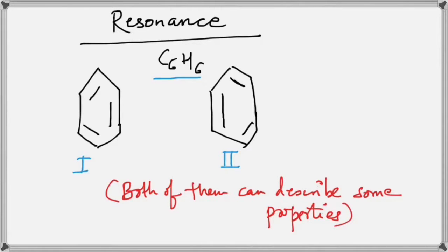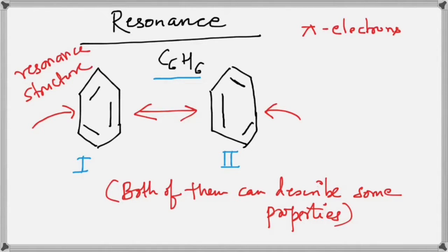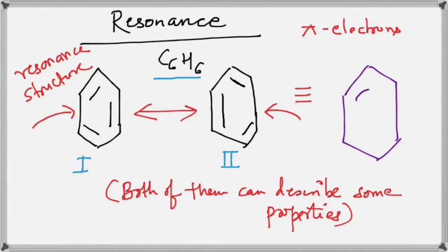Both structures can describe some properties of benzene, but in reality benzene resembles neither of them. The pi electrons in the double bond keep moving, so sometimes benzene might be in the first structure and sometimes in the second. We call them the resonance structures of benzene, and what benzene actually looks like is a hybrid. The true structure shows the pi electrons moving across each carbon atom, forming a circle. This is what resonance does — it removes the flaw of bond-line diagrams and describes the true structure when more than one structure is possible.